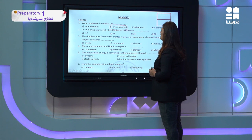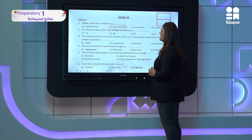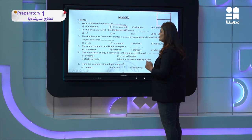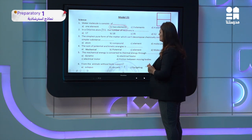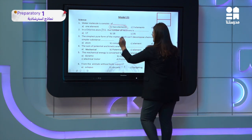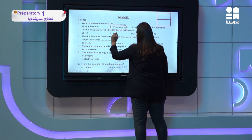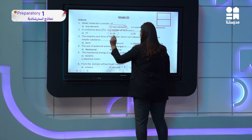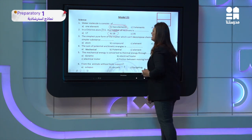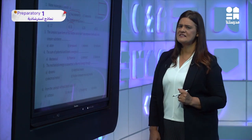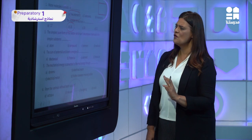In a chlorine atom — Cl with mass number 35 and atomic number 17 — the number of neutrons is found by taking the difference: 35 minus 17, which means the number of neutrons is 18.